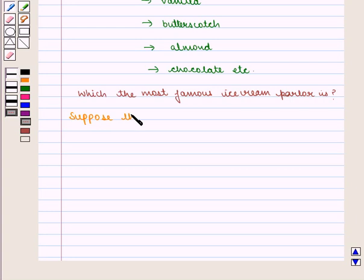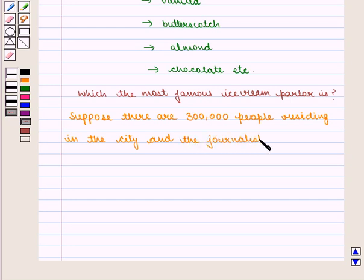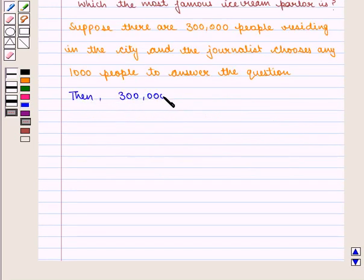There are 300,000 people residing in this city and the journalist chooses only 1,000 people to answer the question. Then 300,000 is the population and 1,000 is the sample.